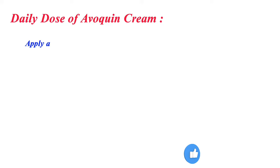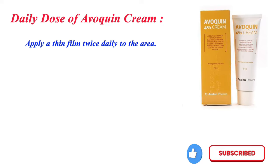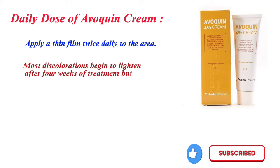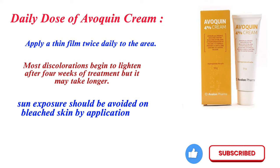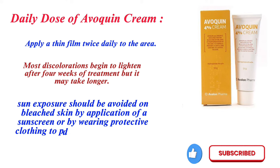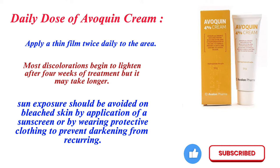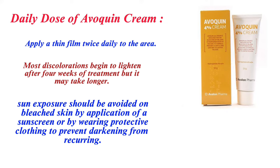Daily dose of Avaquin cream: apply a thin film twice daily to the affected area. Most discolorations begin to lighten after 4 weeks of treatment, but it may take longer. Sun exposure should be avoided on bleached skin by application of a sunscreen or by wearing protective clothing to prevent darkening from recurring.